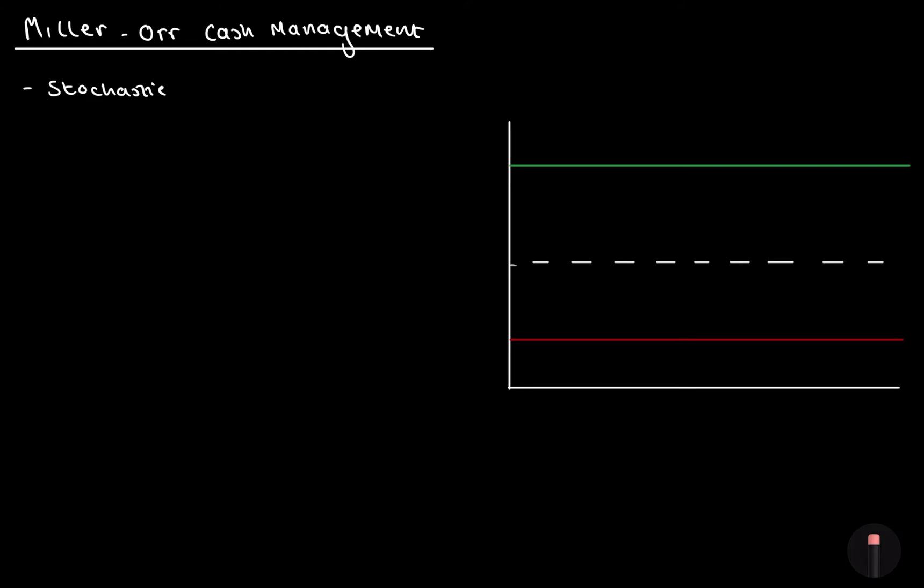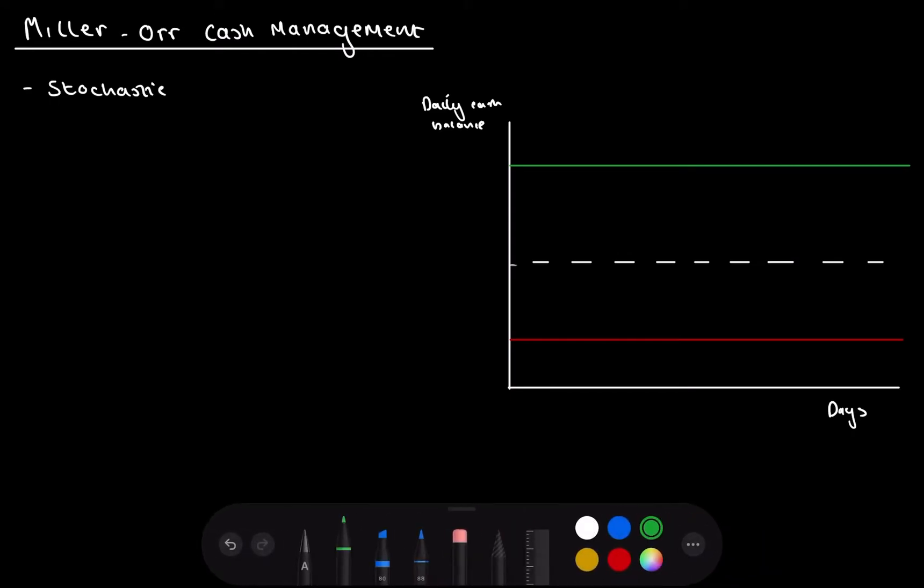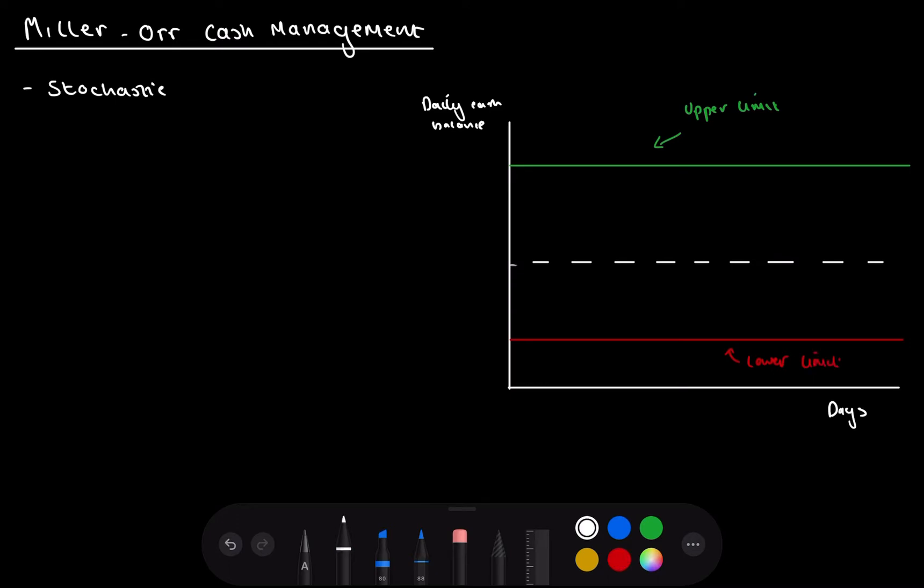This model is best described using a graph. I've got the graph here. I'll write days on the x-axis, or time. We'll say days. And then on the y-axis, we'll say the daily cash balance. So essentially, in the Miller-Orr model, what we have is this top bit here is what we call our upper limit. And this red line is our lower limit.